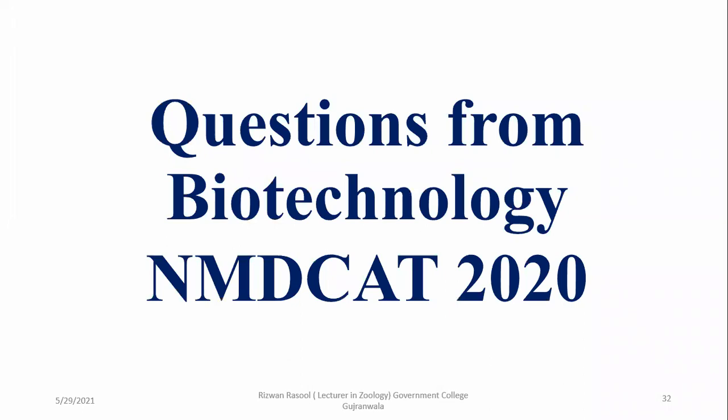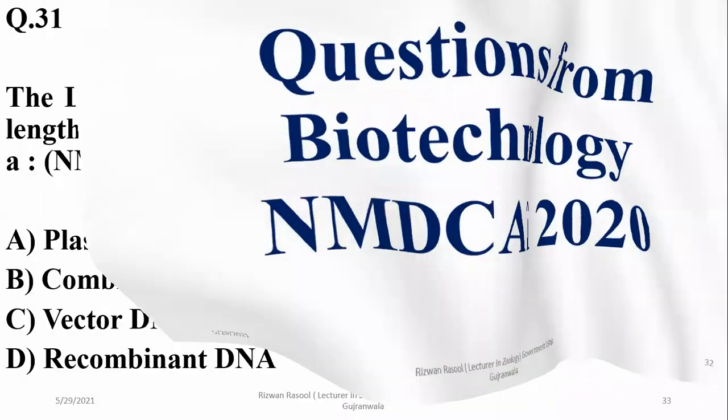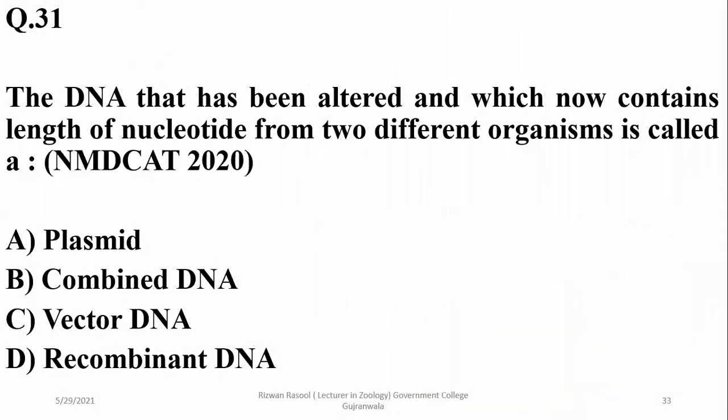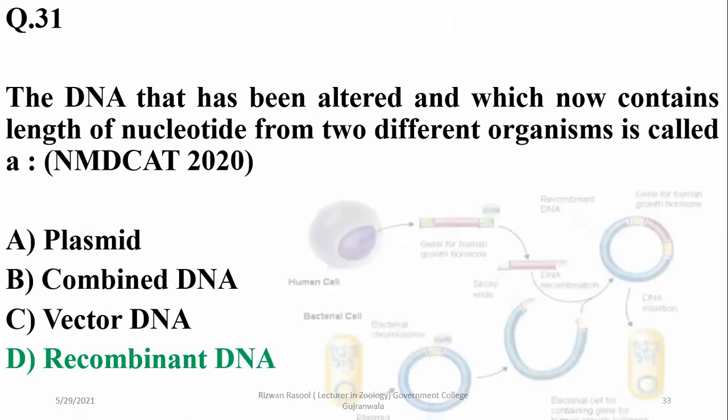Here are some questions from previous papers — the 2020 paper. Question number one from this portion: DNA that has been altered and now contains lengths of nucleotides from two different organisms is called recombinant DNA or chimeric DNA, delta.